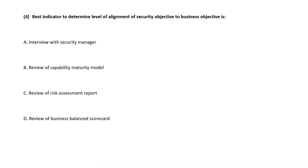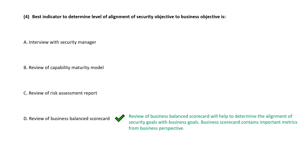Question 4. The best indicator to determine the level of alignment of security objectives to business objectives is — correct answer is option D, to review the business balanced scorecard.